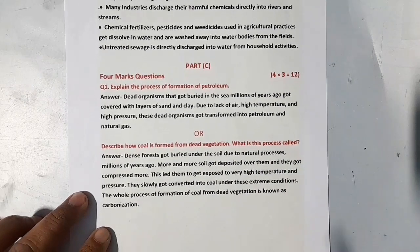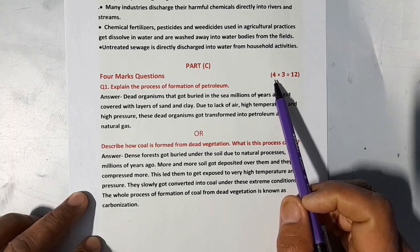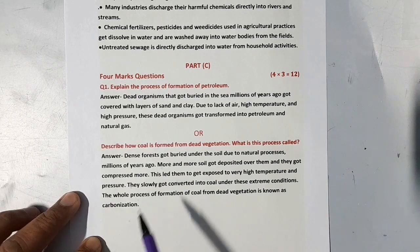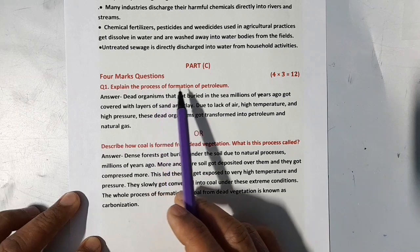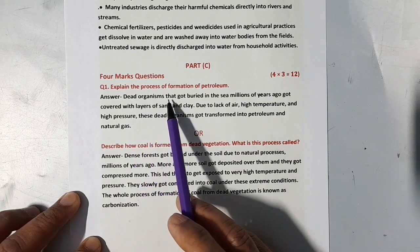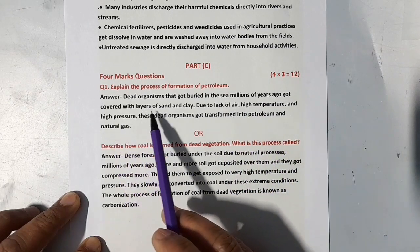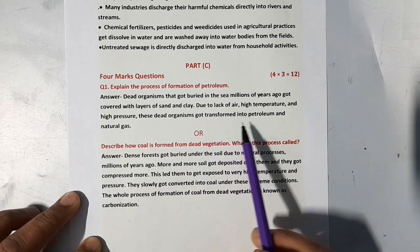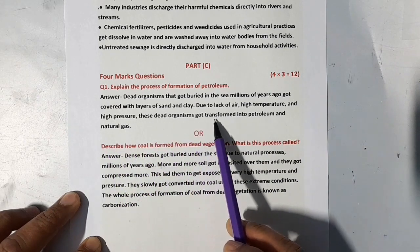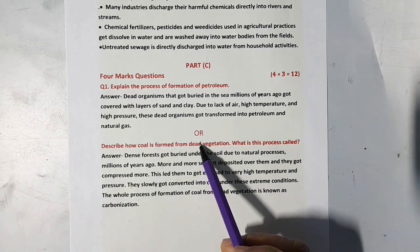Now we come to Part C. Part C consists of 3 questions of 4 marks each and there will be internal choice in these questions. Let's see our first question: Explain the process of formation of petroleum. Dead organisms that got buried in the sea millions of years ago got covered with layers of sand and clay. Due to lack of air, high temperature and high pressure, these dead organisms got transformed into petroleum and natural gas.